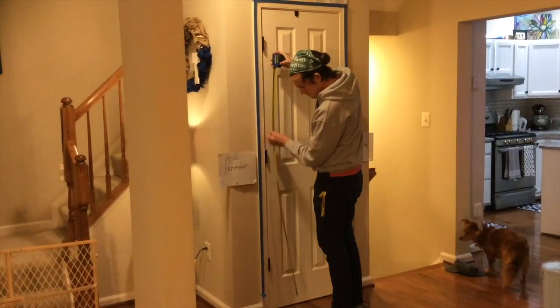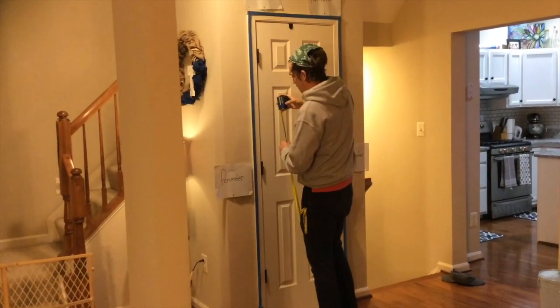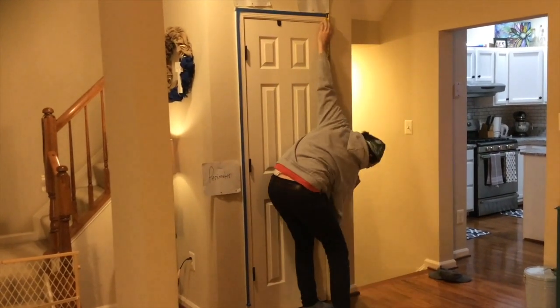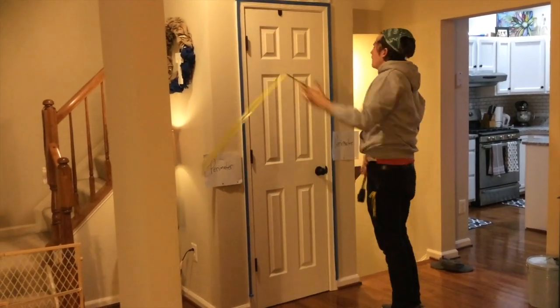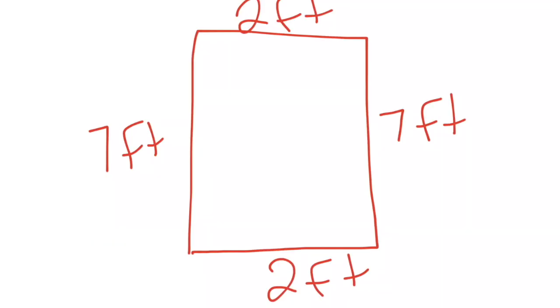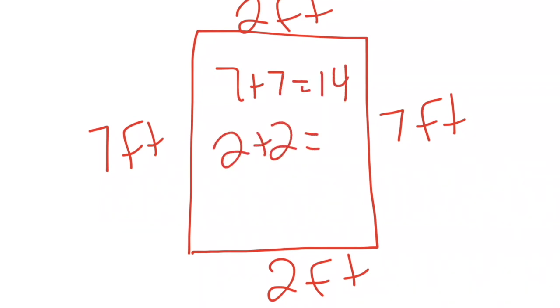Well, I guess you could kind of explain it like this. You add all the sides to find the perimeter. It doesn't matter what shape it's for. The distance around the edge is what we're looking for. That's what makes perimeter.